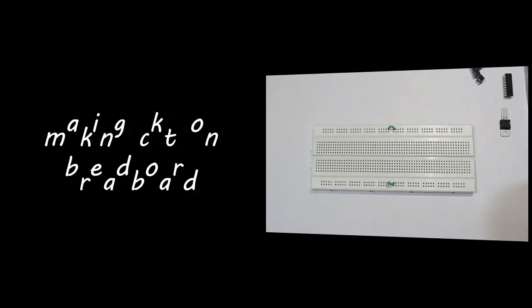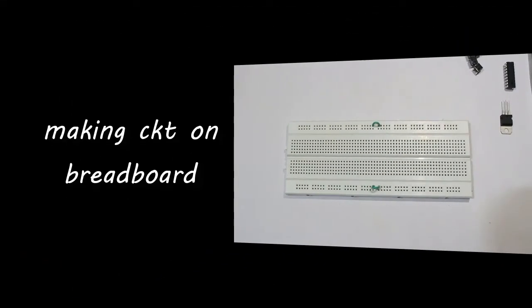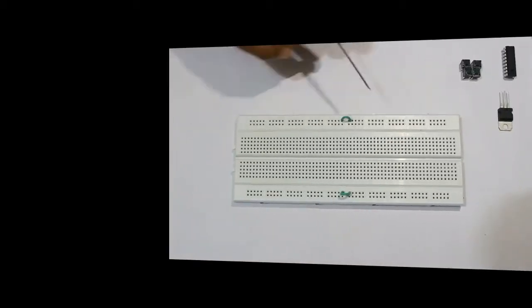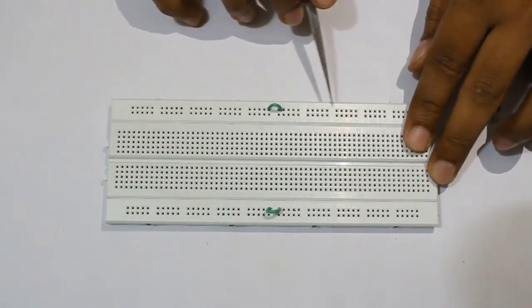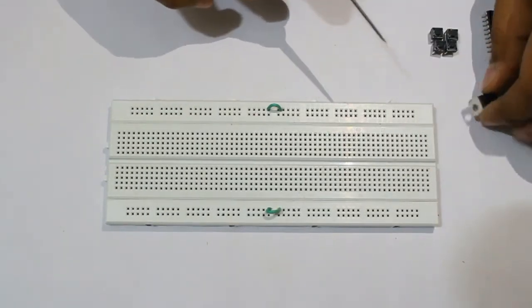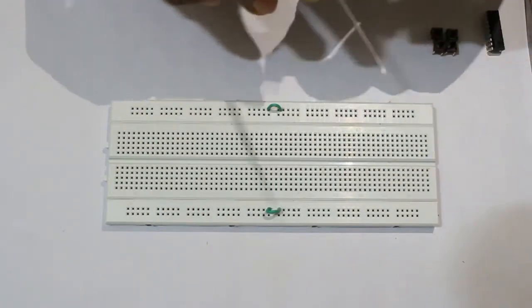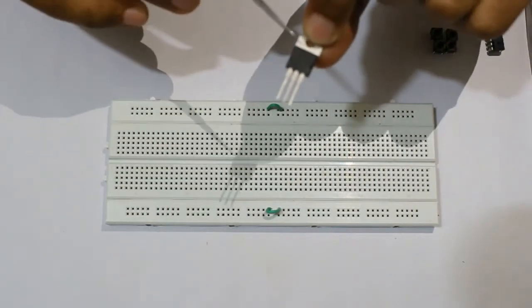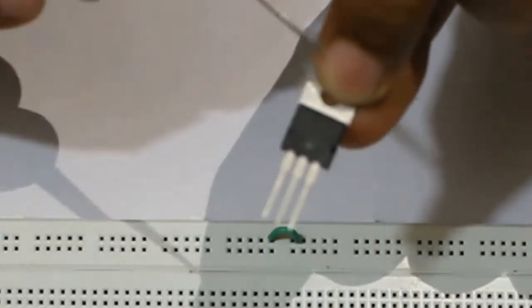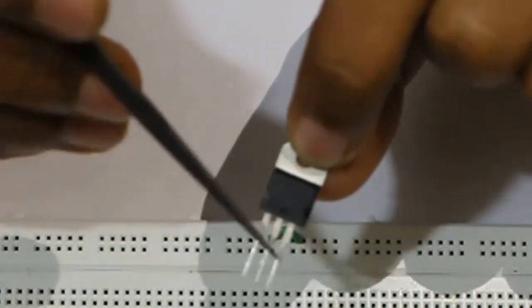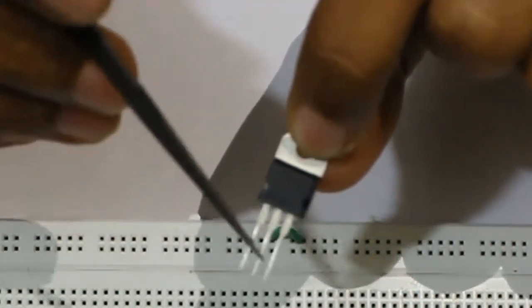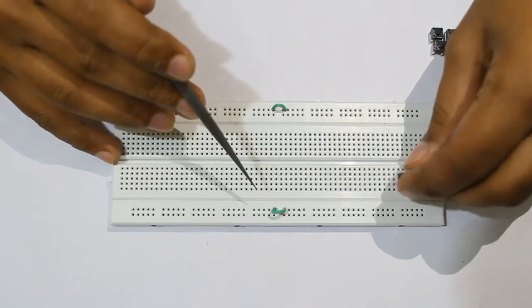Now let's come to the making of circuit on breadboard. Here you can see that I have taken the breadboard and I have shorted my lines, the upper line and the lower line, as you know that there are only 5 lines which are connected to each other. I am using a 5V voltage regulator. The first pin is for input, middle is ground, and third pin is output.